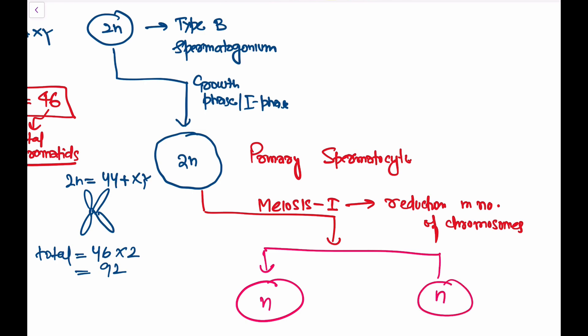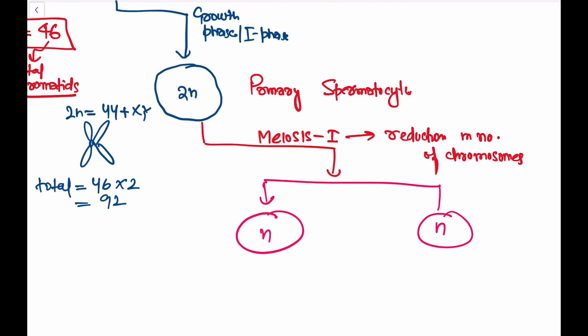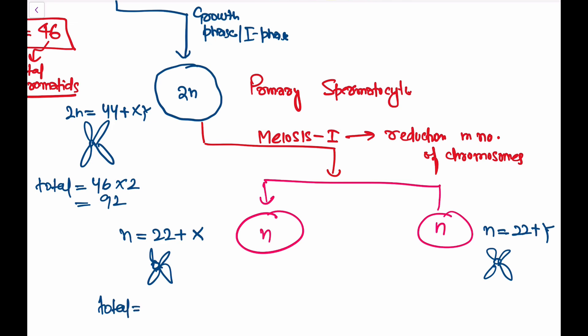One of these cells has the genotype 22 + X and the other has 22 + Y, because X and Y go to opposite sides. Since Meiosis I does not reduce chromatids, each chromosome still has two chromatids. Each cell has 23 chromosomes × 2 chromatids = 46 total chromatids.